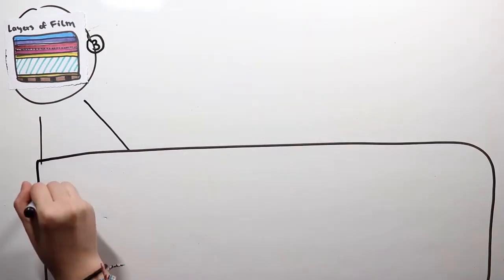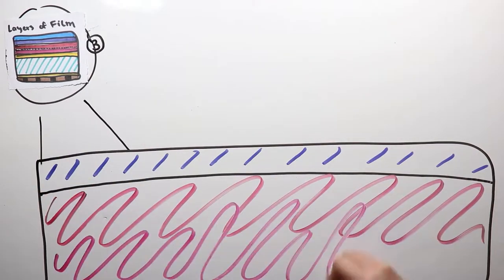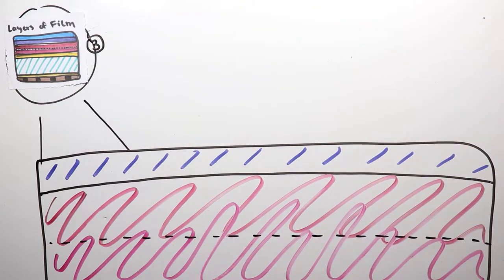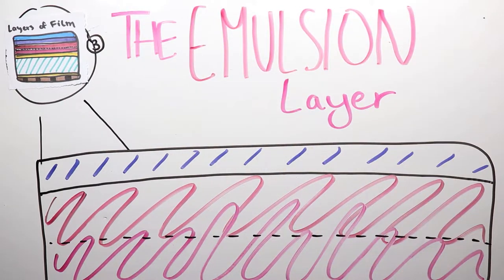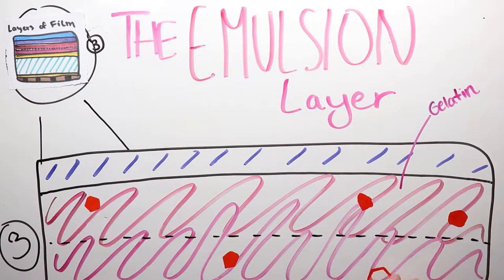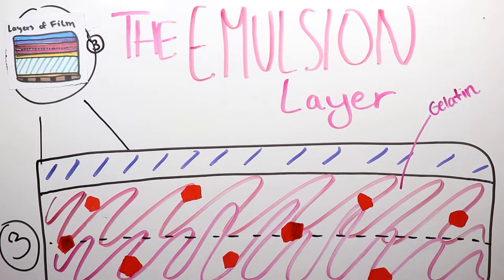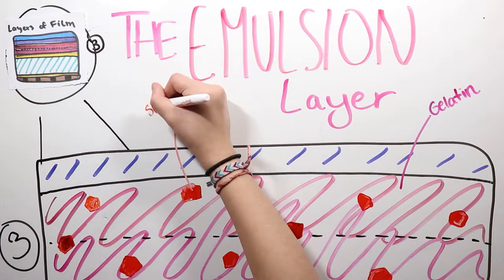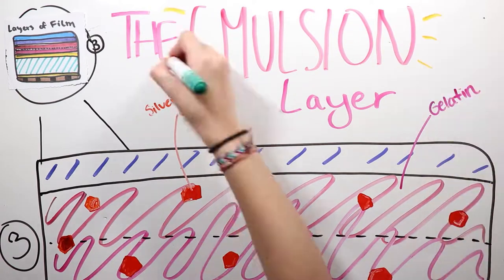Underneath this layer comes the most fundamental layer to film, the emulsion layer. This layer is light-sensitive and made from gelatin, and the gelatin contains silver halide crystal grains, such as silver chloride, iodide, or bromide.